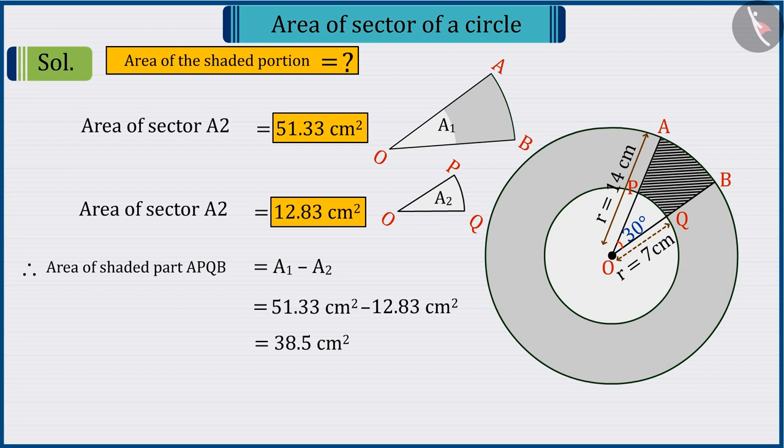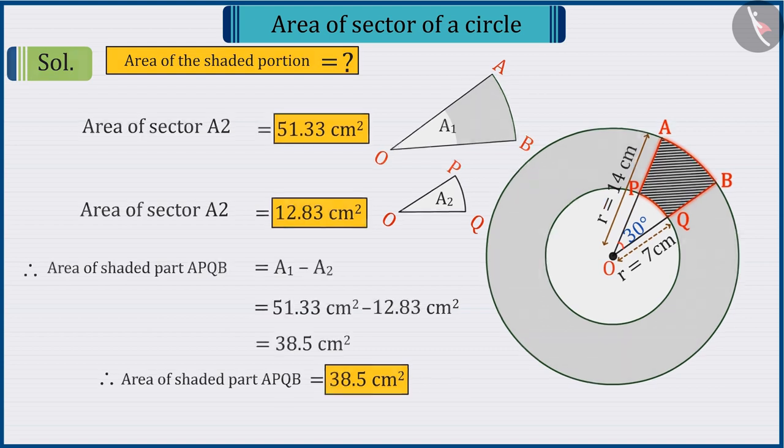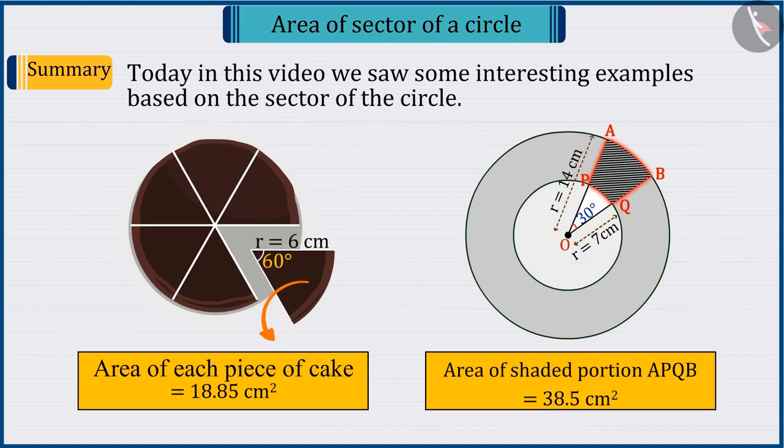So, we can say that the area of shaded part APQB is 38.5 square centimetres. In this video, today we saw some interesting examples based on the sector of the circle.